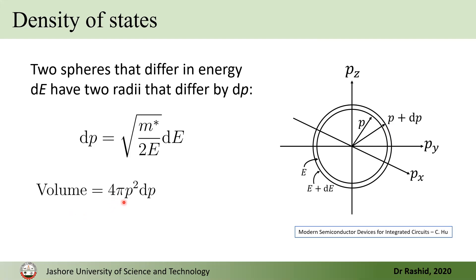So, the volume is 4 pi P square dP. Now, if we put the values of P and dP, then we have this expression. So, this is the volume of this shell.